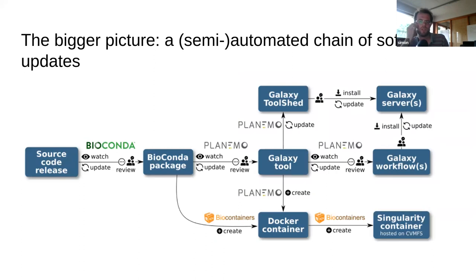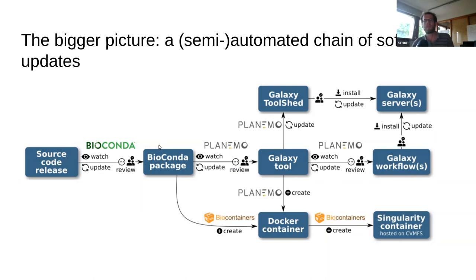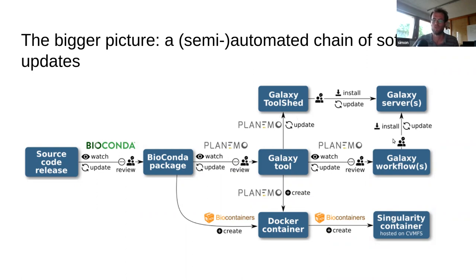To finish off, I wanted to show this figure from the Planemo paper which we submitted recently. The idea is that we have an entire chain of automated software version updates: we start with source code on GitHub, the Bioconda bot takes care of creating the new Bioconda package, then the auto-update bot creates the new Galaxy tool and Galaxy workflow, the BioContainers community deals with creating Docker and Singularity containers, and then the tools and workflows get installed to the Galaxy Toolshed, to the Docker store, and from there on to the big services like usegalaxy.eu or usegalaxy.org.